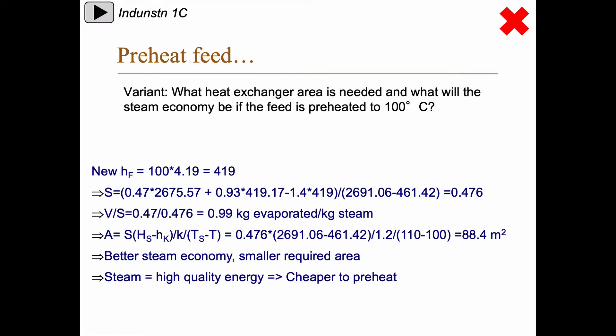Is this 0.99 kg evaporated per kilogram of fresh steam used actually good? Yes, it is. If you think about it, the energy needed to evaporate something is the evaporation enthalpy, and the energy that the steam releases to the feed side is also the evaporation enthalpy — and those are approximately the same value on the steam side and on the feed side. So a rule of thumb is that a steam economy of one is as good as you can get, approximately.